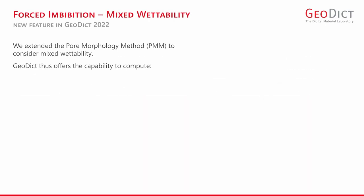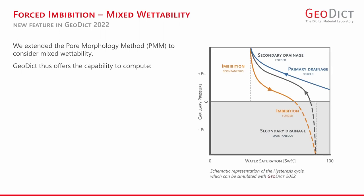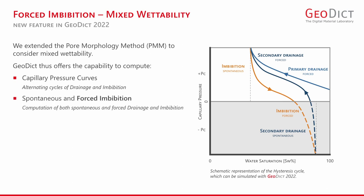In GeoDICT, the pore morphology method is now capable of considering mixed wettability in digital rocks at sample sizes demanded by the industry. Today's capabilities include the computation of the capillary pressure curve for alternating cycles of drainage and imbibition, and the computation of the spontaneous and the forced parts of imbibition and drainage.